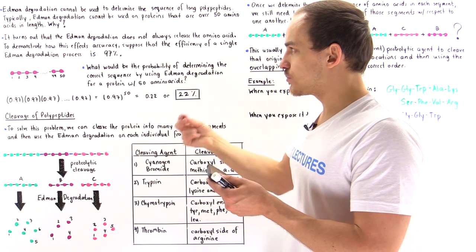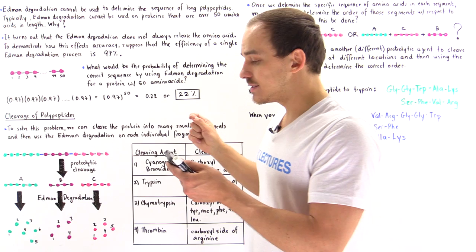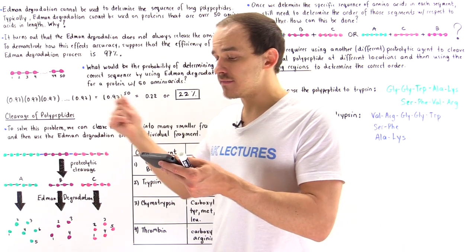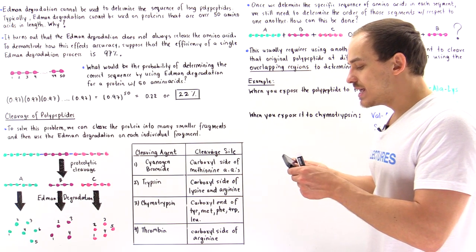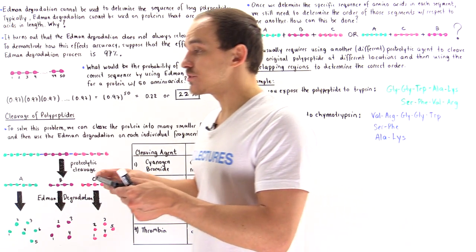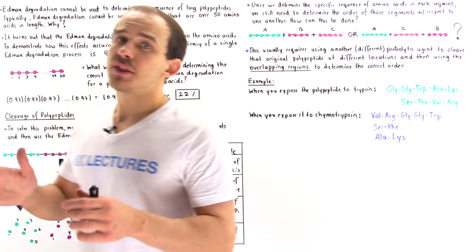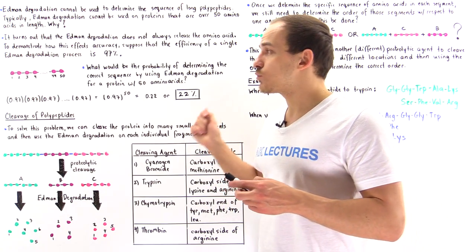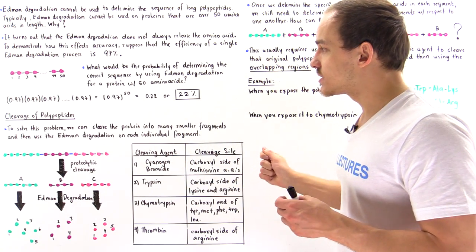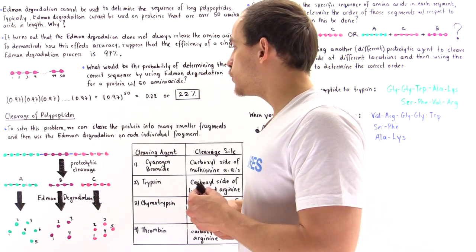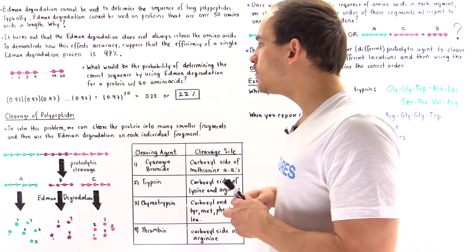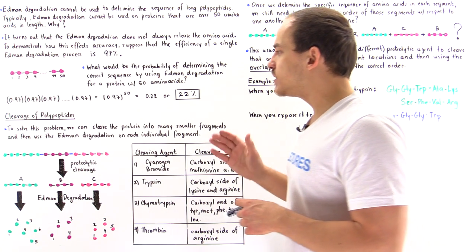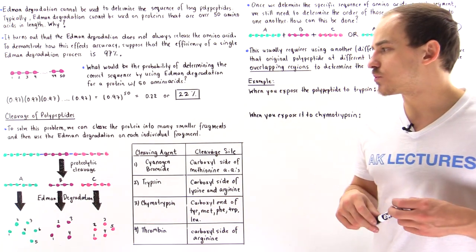If the likelihood that a single Edman degradation step is correct is 97%, and we raise that to the power of 10, we get 0.97 to the 10th power — about a 74% likelihood that the sequence is correct. So if we break down the polypeptide into small fragments, the likelihood of getting the correct result increases tremendously. To solve the problem, we cleave the protein into many smaller fragments and then use the Edman degradation process on each individual fragment.